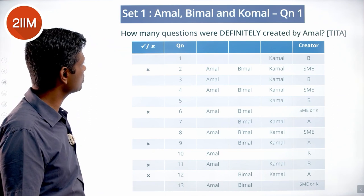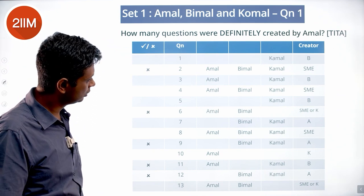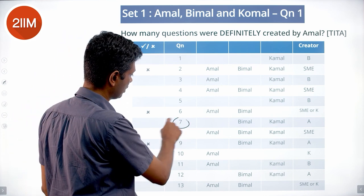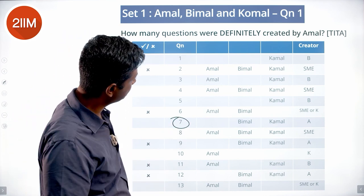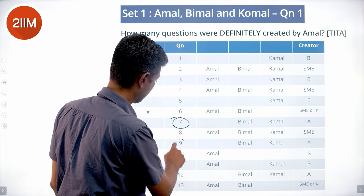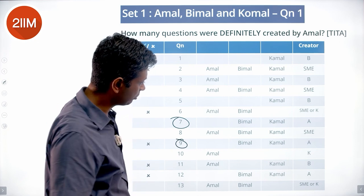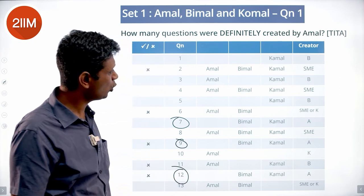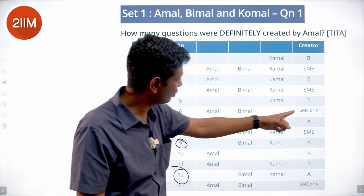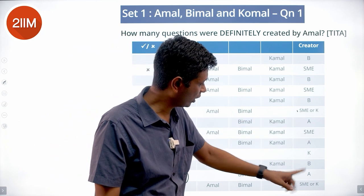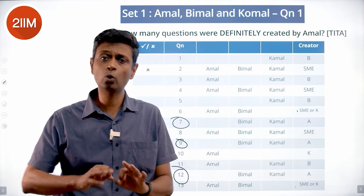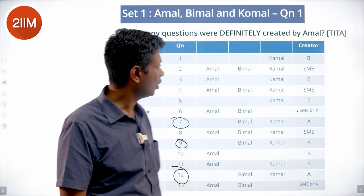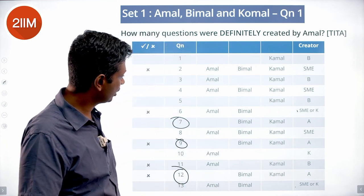How many questions were definitely created by Amal? Q7, Q9, and Q12 are definitely created by Amal — we know it for all but two ambiguous cases. So Amal has definitely created 3 questions.